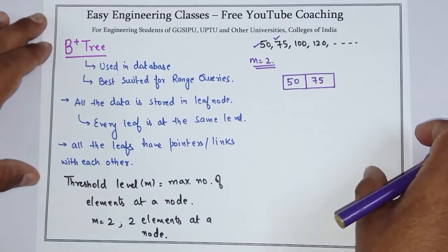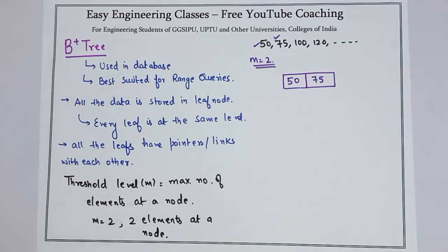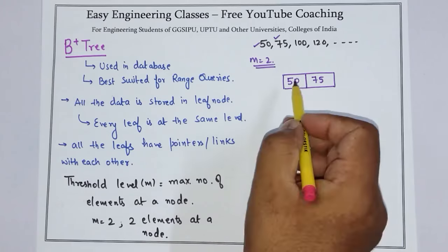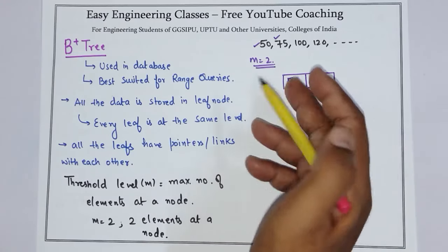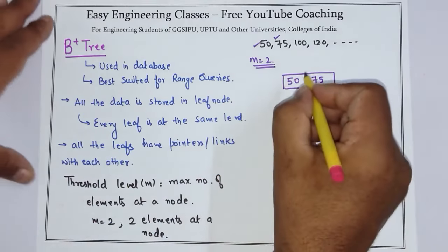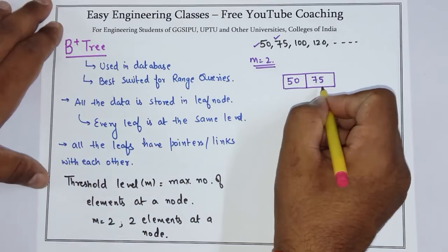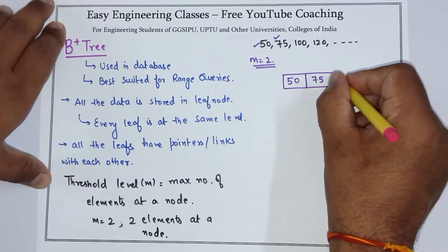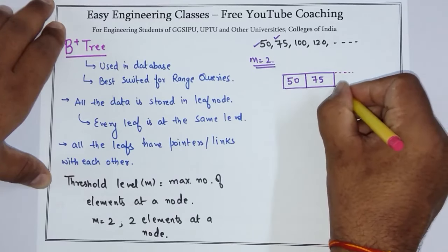But now when 100 comes, what will happen? You need to look at binary search tree property. The node on right hand side is greater and left hand side is smaller. So we have to place 75 to the right of 50. Now when 100 comes, it should also be to the right of 75. So we have to place 100 here.